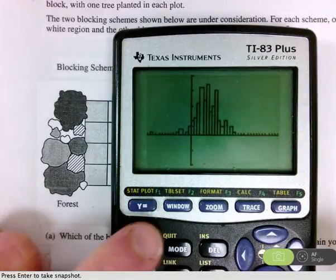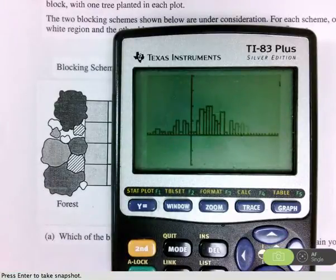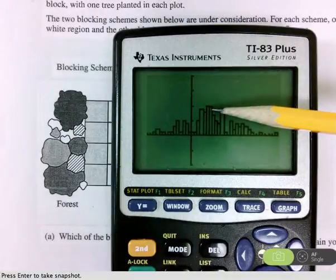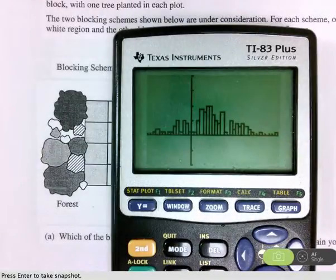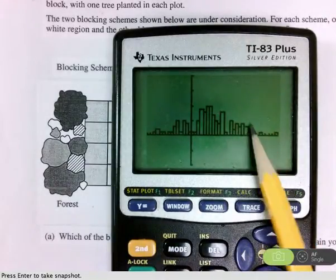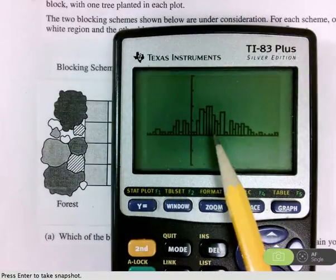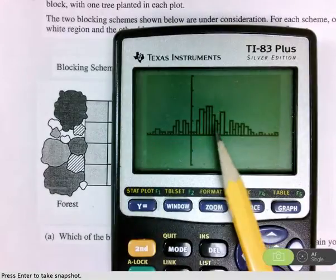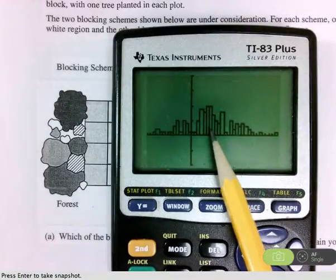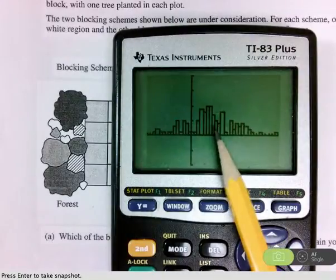Now look what happens with blocking scheme B. Again, in blocking scheme B, notice that in the middle, we find the truth. But once again, because we're not controlling for the effect of the forest, there is a lot of sampling variability. Some people got results that are very high or very low compared to where the truth is. Our sample results are much more compact. In general, they're centered around and much closer to the truth using blocking scheme A, rather than using blocking scheme B, or using just a simple random sample that uses no blocking.